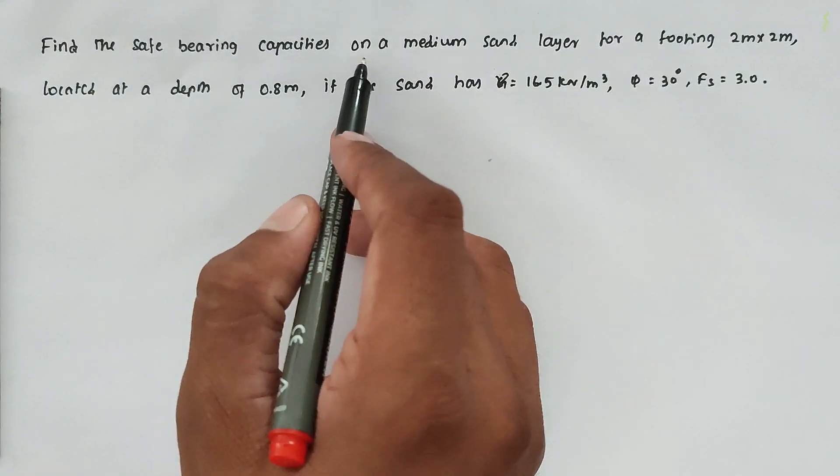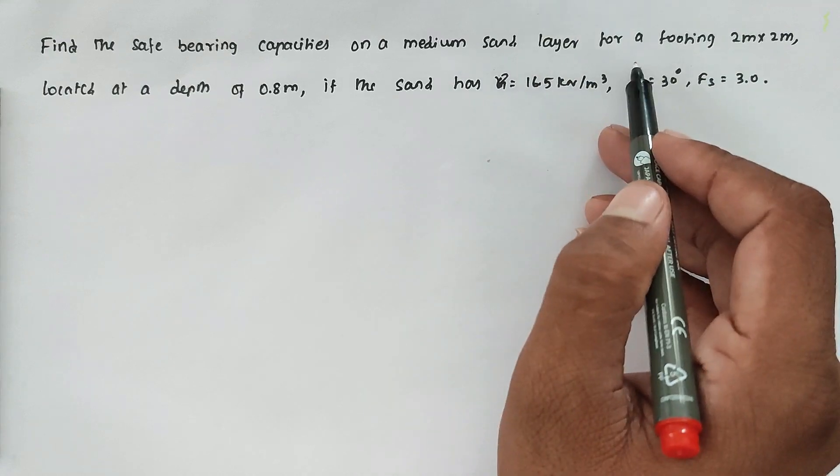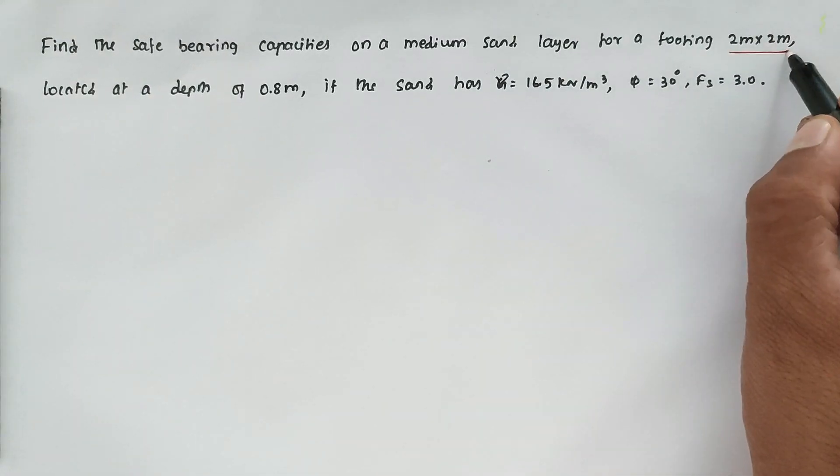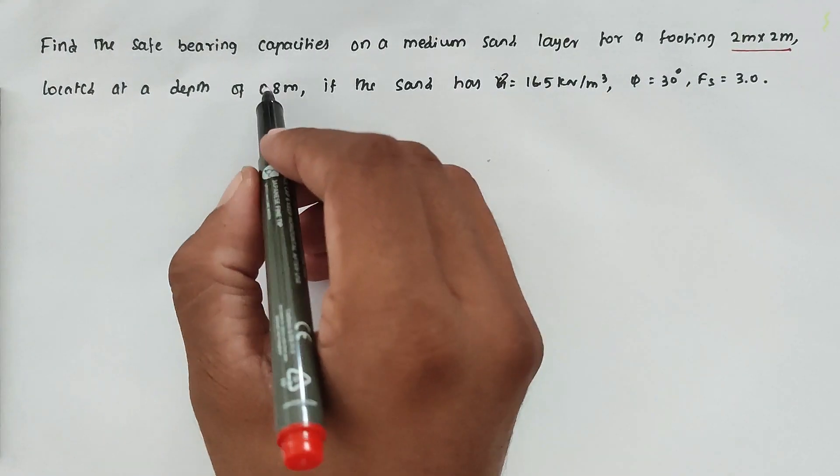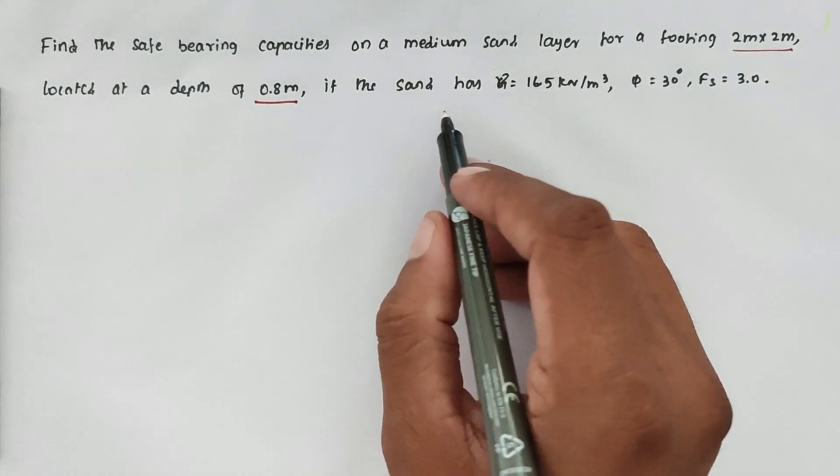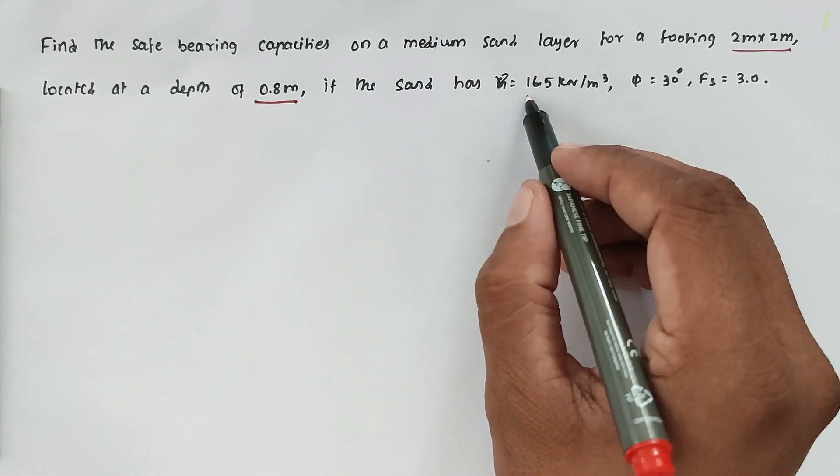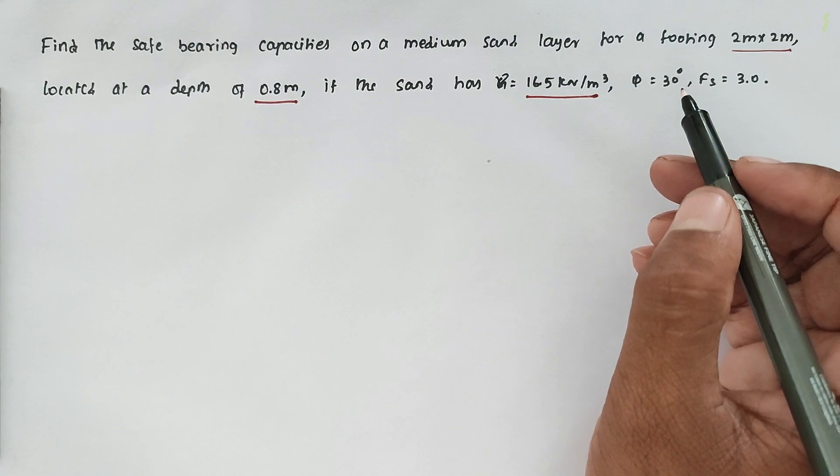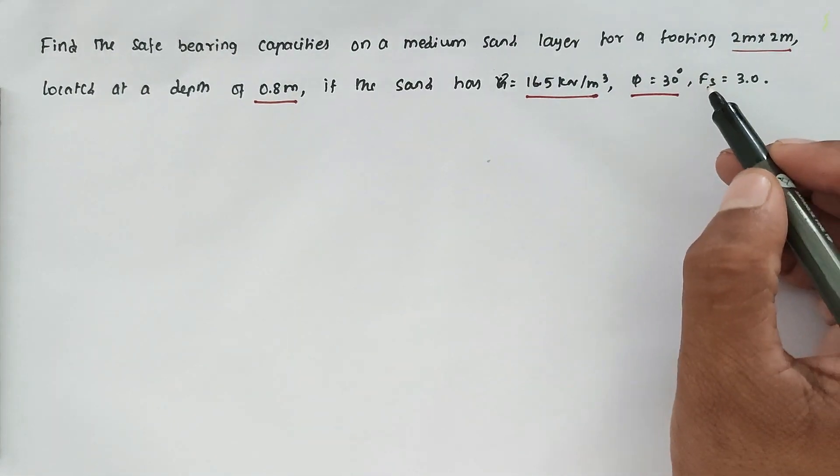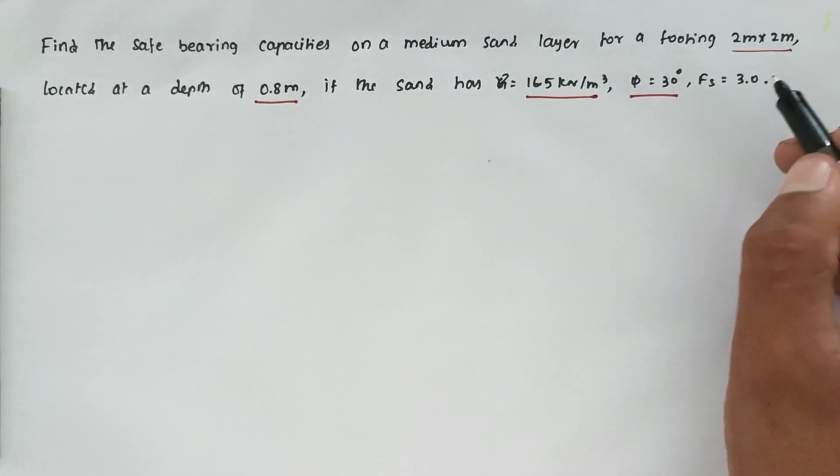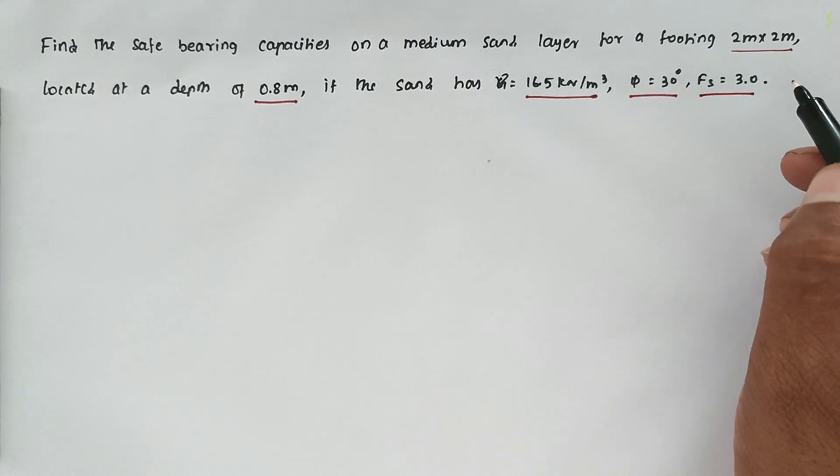The question is: find the safe bearing capacity on a medium sand layer for a footing 2 meter by 2 meter located at a depth of 0.8 meter. If the sand has γ = 16.5 kN/m³, φ = 30°, that is angle of internal friction, and Fs (factor of safety) = 3.